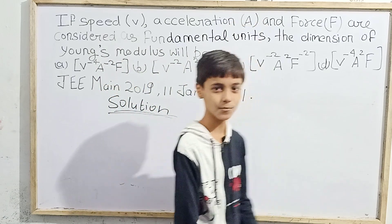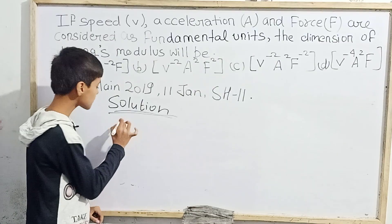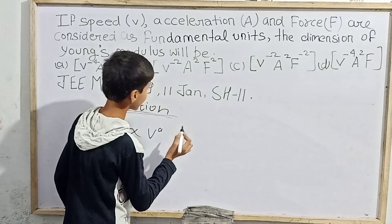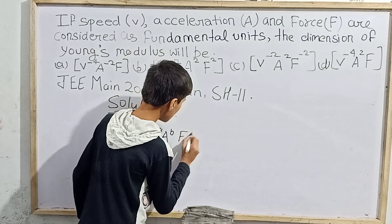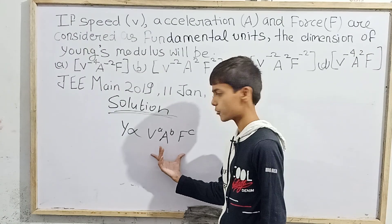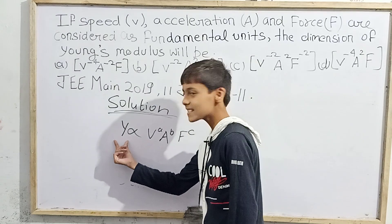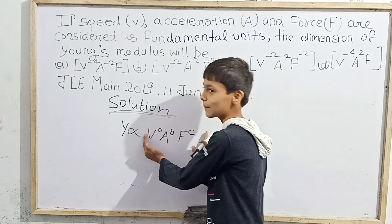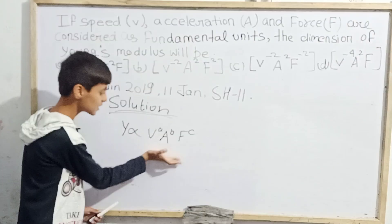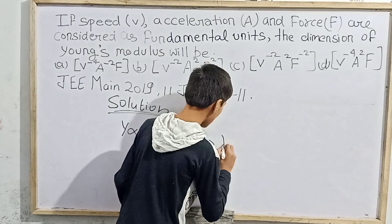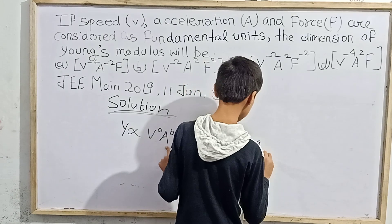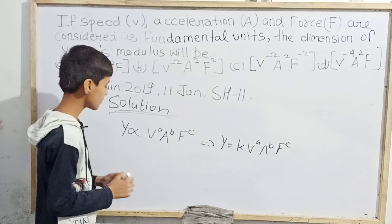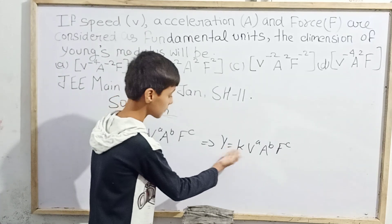We need to find the dimensional formula for Young's modulus, denoted by Y. Since v, a, and f are the fundamental units, Y will be proportional to v^a · a^b · f^c. Removing the proportionality symbol introduces a constant k, so Y = k · v^a · a^b · f^c. Since any derived unit depends on the fundamental units, this setup is valid.